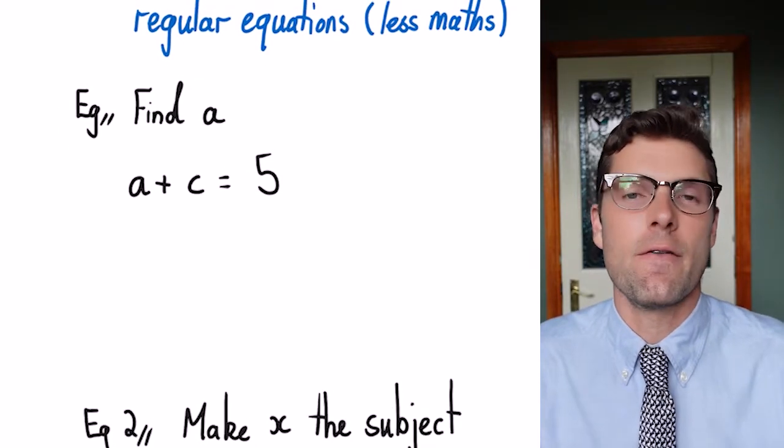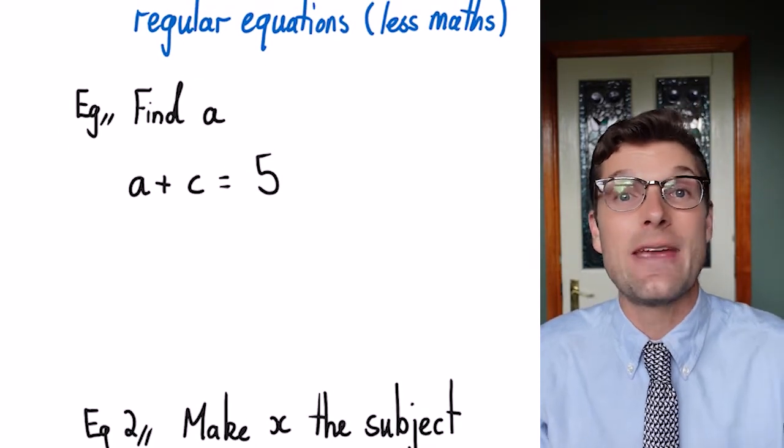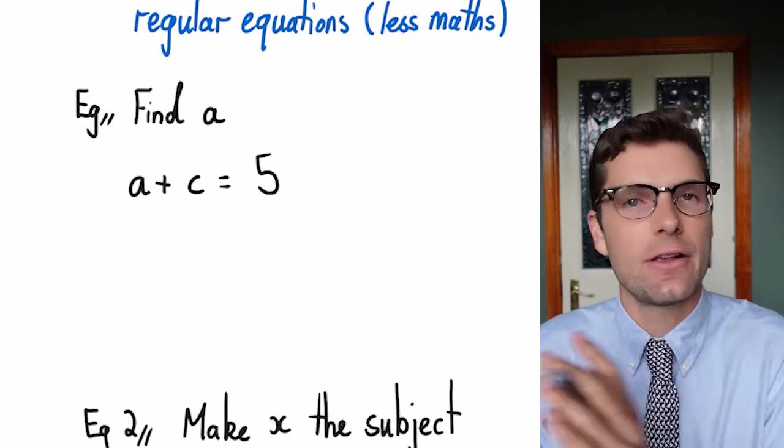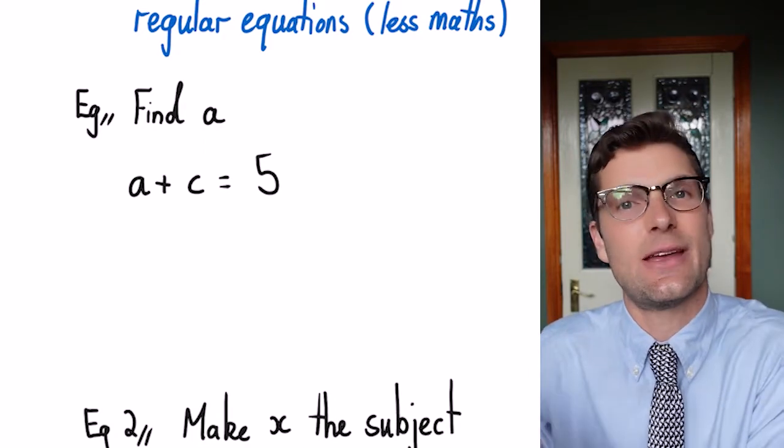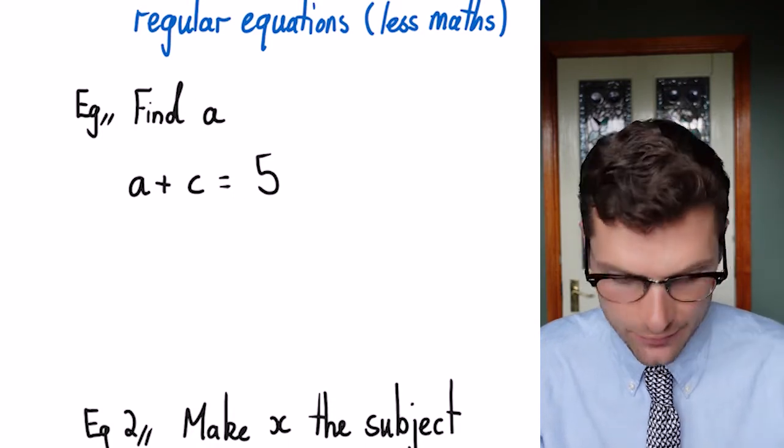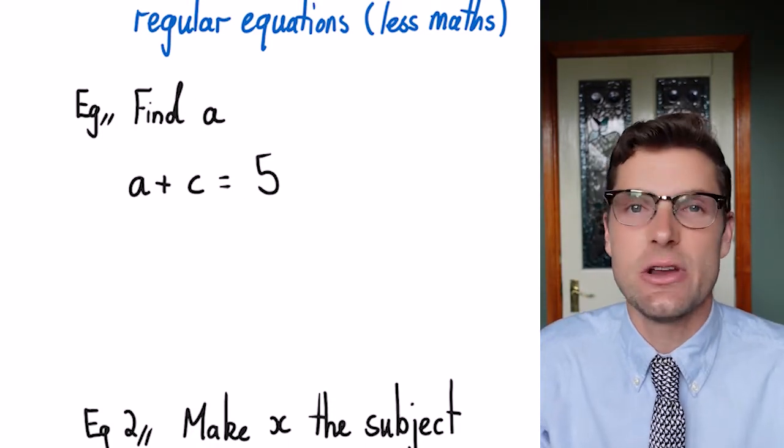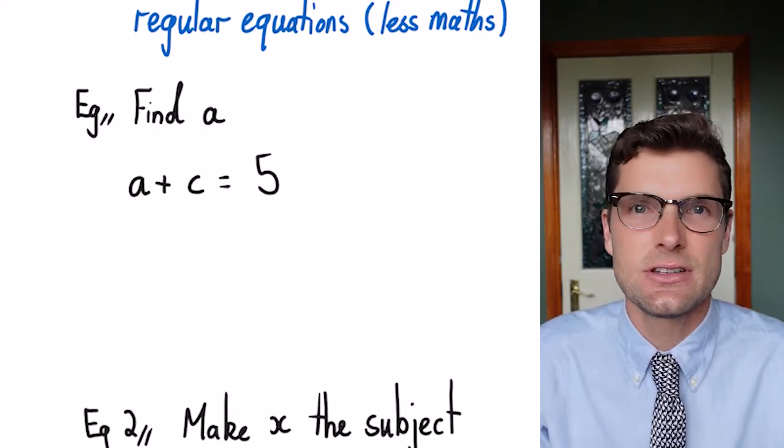So in this first example here we've got find a. We need a by itself. That's our goal for this equation. Everything else that's not a has to be on the other side of the equal sign. So we've got a plus c is equal to five. But we don't know what c is equal to either. Neither of these things are given to us.